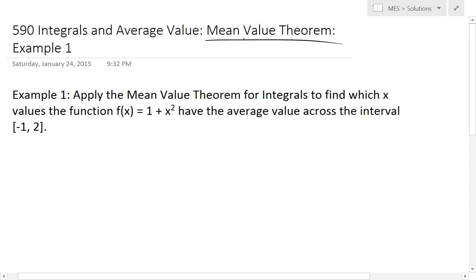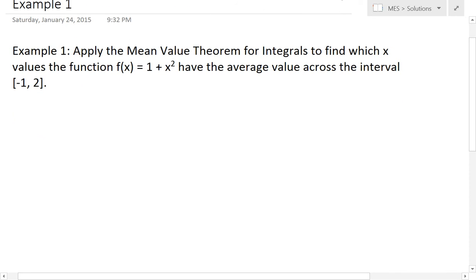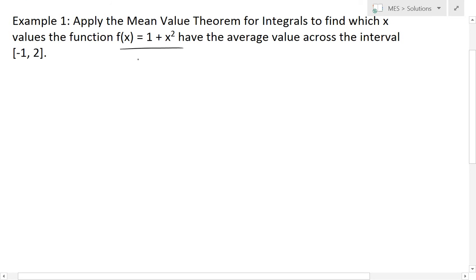In my earlier videos I went over the mean value theorem and its proof, so make sure to watch that. The example I'm going to go over says, apply the mean value theorem for integrals to find which x values the function f(x) = 1 + x² have the average value across the interval [-1, 2]. Basically they're saying find x values where f of those x values equals the average value in this interval.